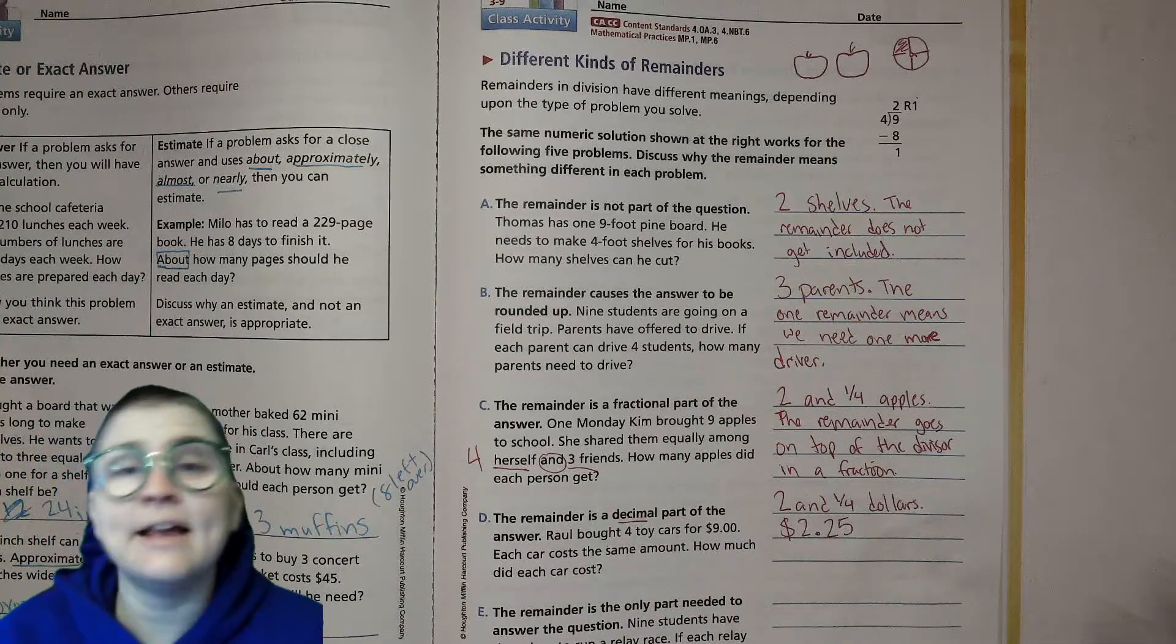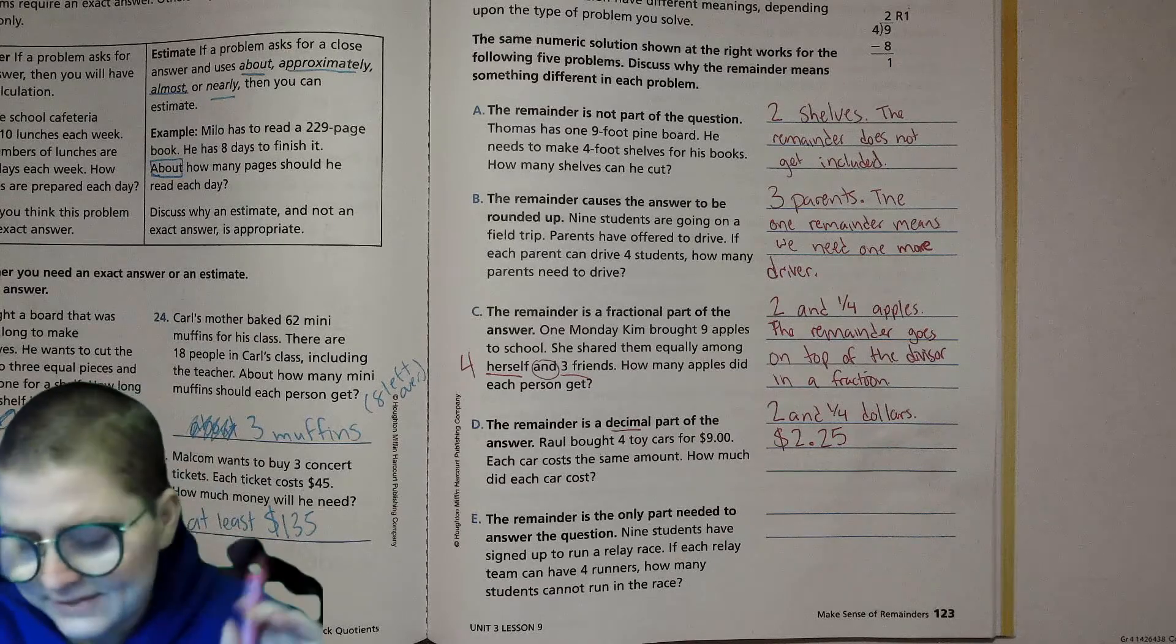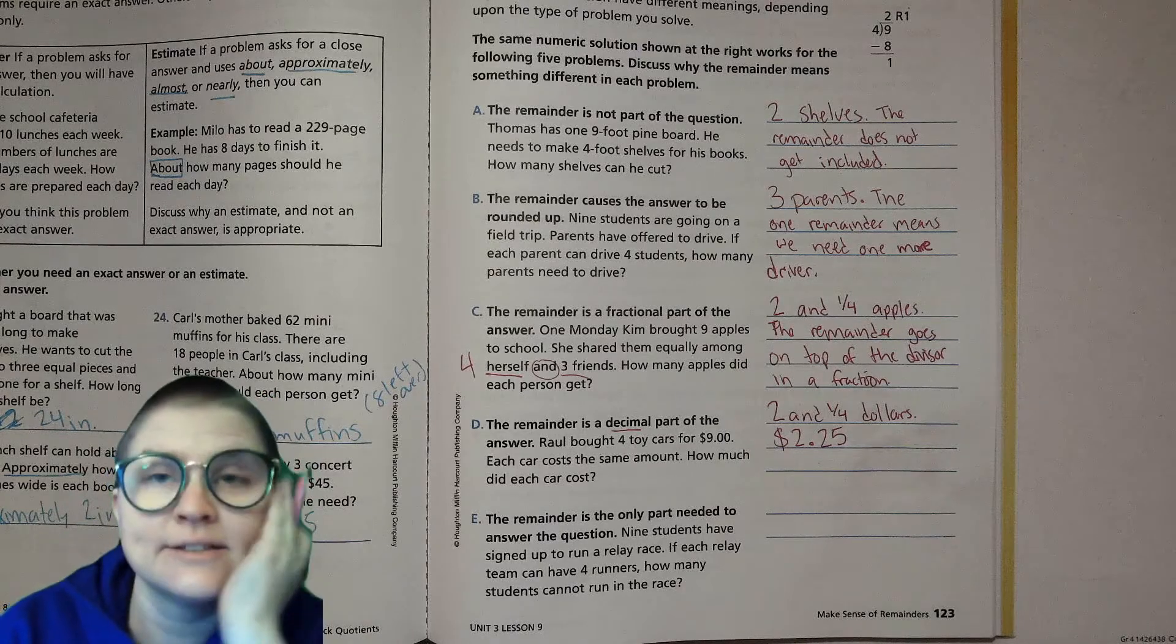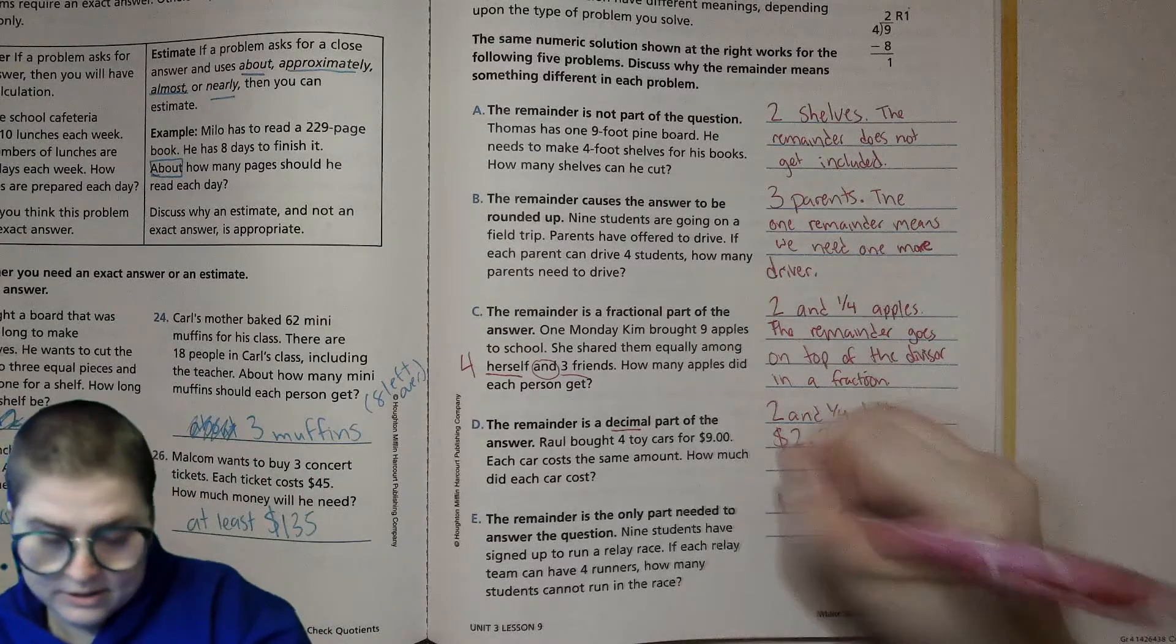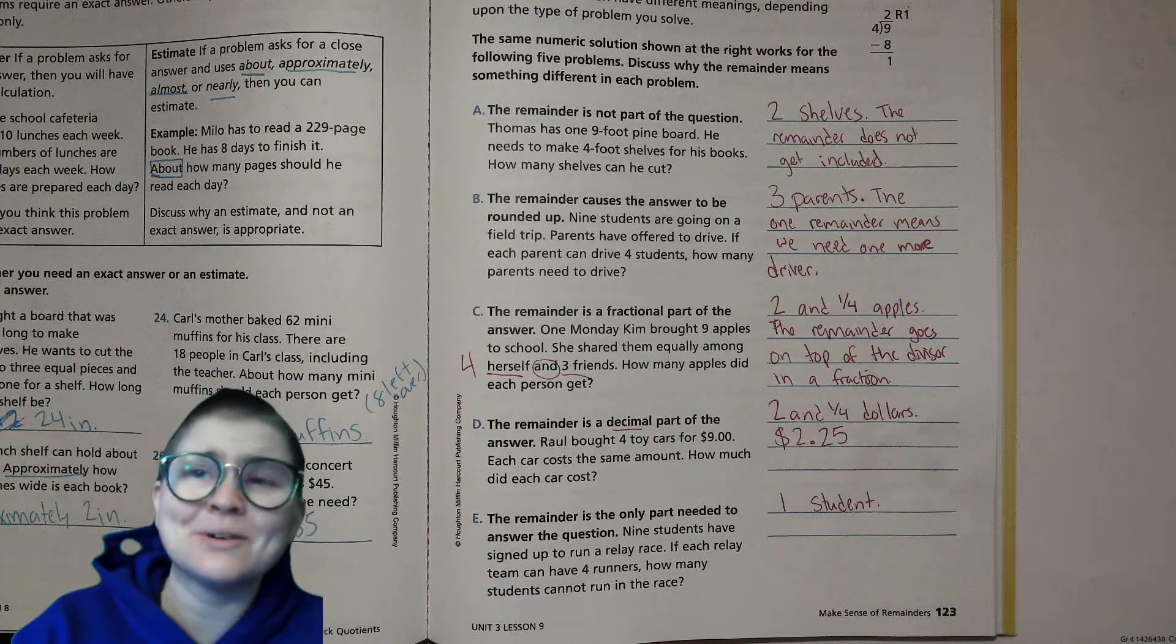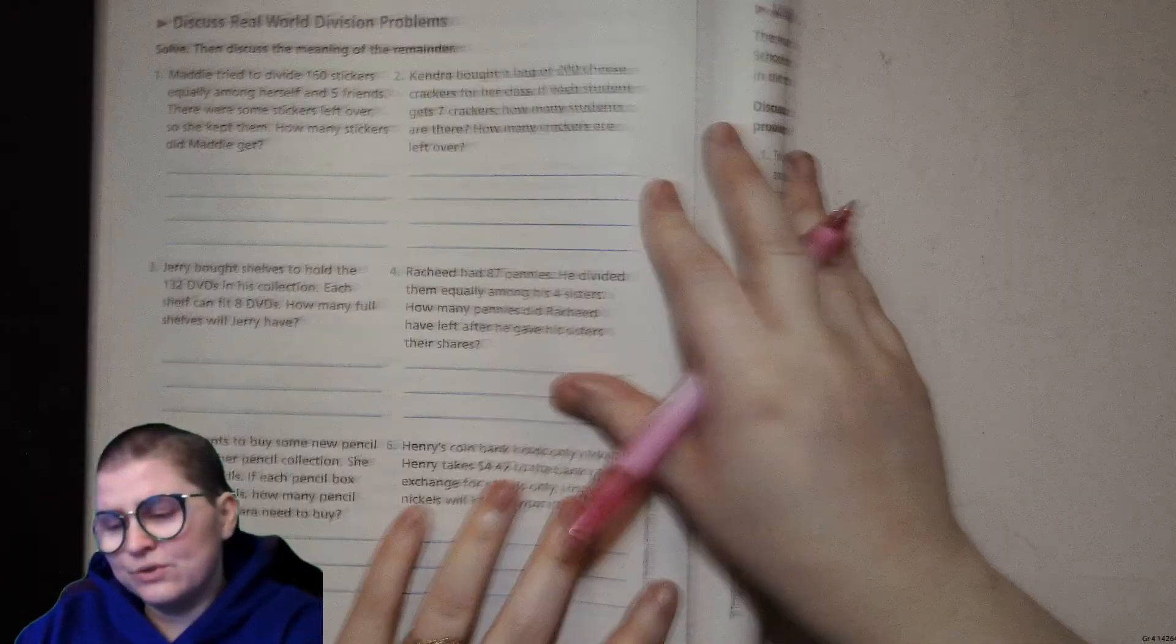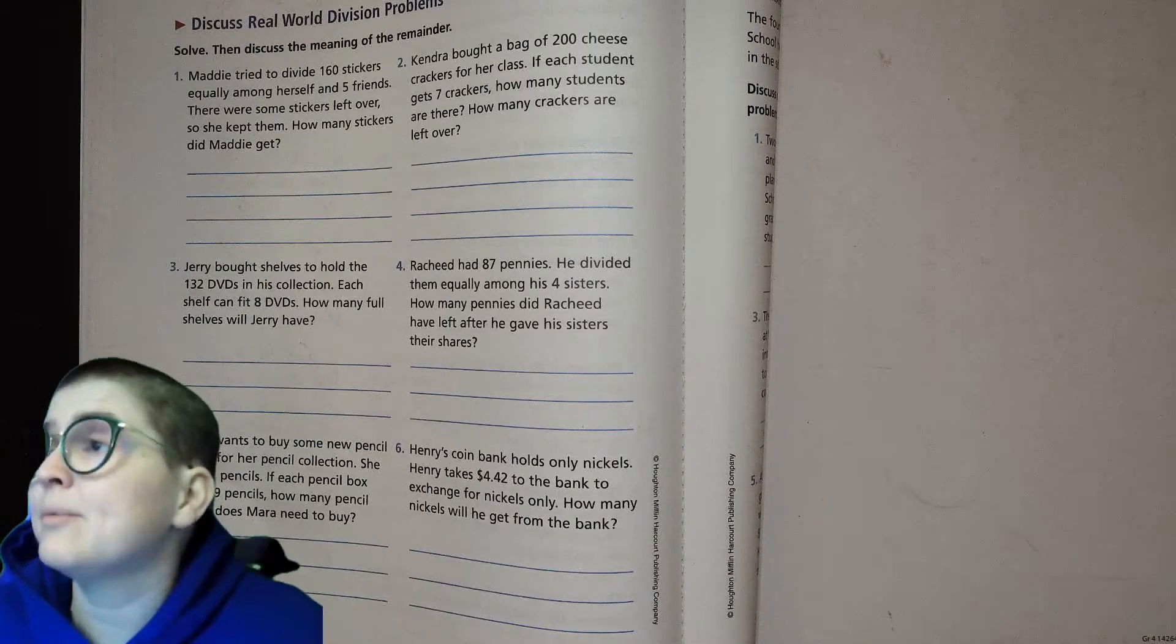Last but not least, the remainder is the only part needed to answer the question. Nine students have signed up to run a relay, if each relay can have four runners, how many students cannot run in the race? Well in this case there's eight kids running and there's one kid left out, so one student. Now we're going to practice doing problems like this and trying to identify how to use that remainder as we answer the questions.